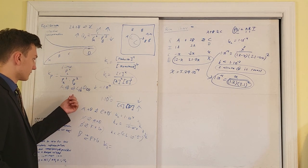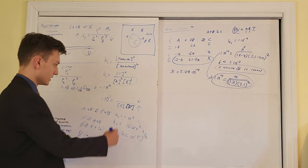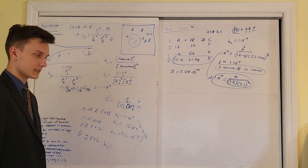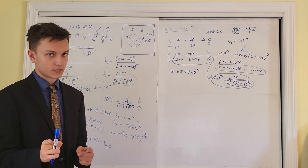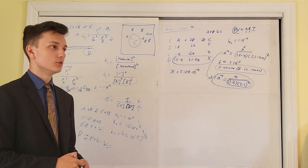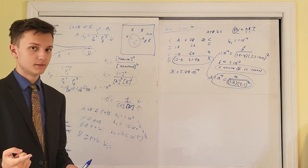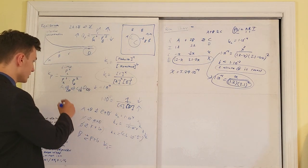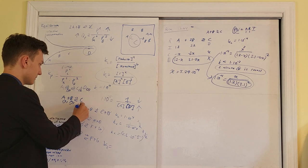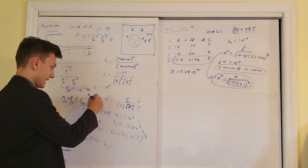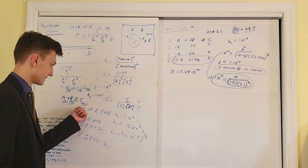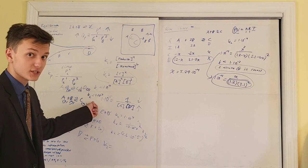If all species are gases and the problem gives you a Kc, you still use concentrations — the type of K dictates what you plug in. If C is a liquid and D is a solid, neither participates in the equation, and you're just left with a 1 in the numerator. Gases can have concentrations if given, but more commonly you'll use partial pressures with Kp.